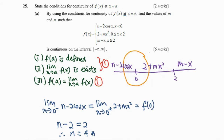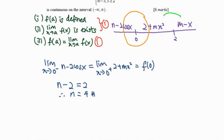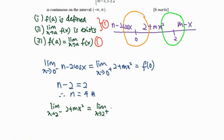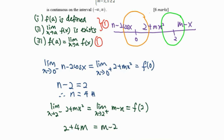Therefore n equals 4. Then for the next point at x equals 2, the limit as x approaches 2 from the left — which is 2 plus mx squared — must equal the limit from the right — which is m minus x — and both must equal f(2). Substituting x equals 2, we get 2 plus 4m equals 2m minus 2. Simplifying gives 3m equals negative 4, so m equals negative 4 over 3.